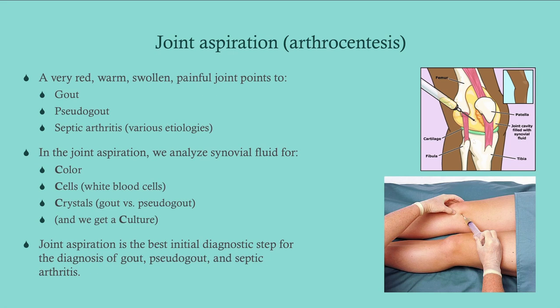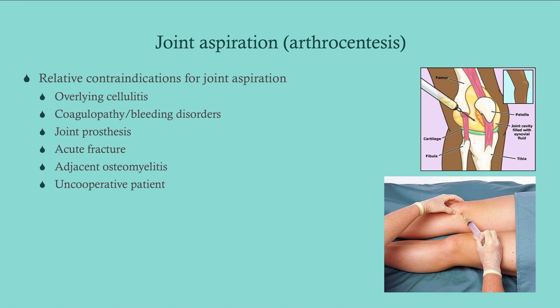This is the arthrocentesis, which we do to analyze the joint fluid. When would you want to do this? If you've got a red, warm, swollen, painful joint — just make sure the patient doesn't have cellulitis, because we definitely do not want to seed the joint. When we get the fluid, we look for the 4Cs: color, cells, crystals under the microscope, and then culture. Joint aspiration is the best initial diagnostic step when suspecting gout, pseudogout, or septic arthritis — with gout and pseudogout you've got to look for crystals under the microscope, and with septic arthritis you've got to know what you're growing. Relative contraindications include overlying cellulitis, coagulopathy or bleeding disorders, joint prosthesis (send to orthopedic surgery), acute fracture, adjacent osteomyelitis, or an uncooperative patient.